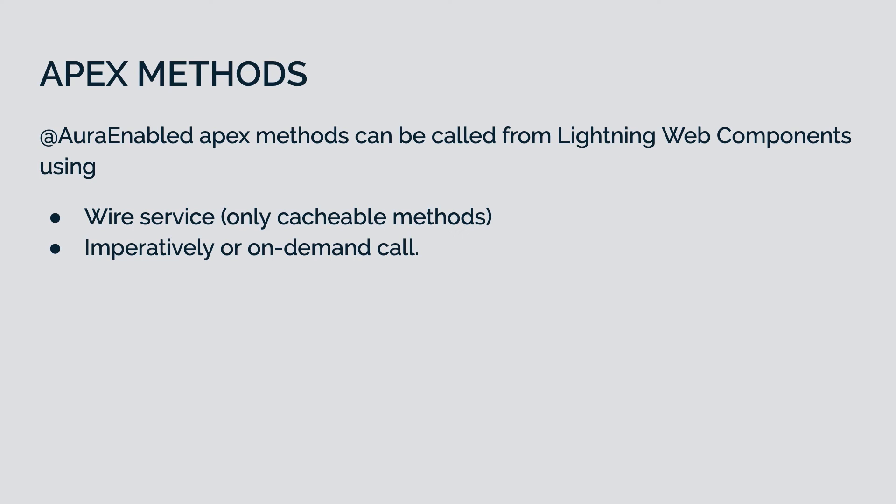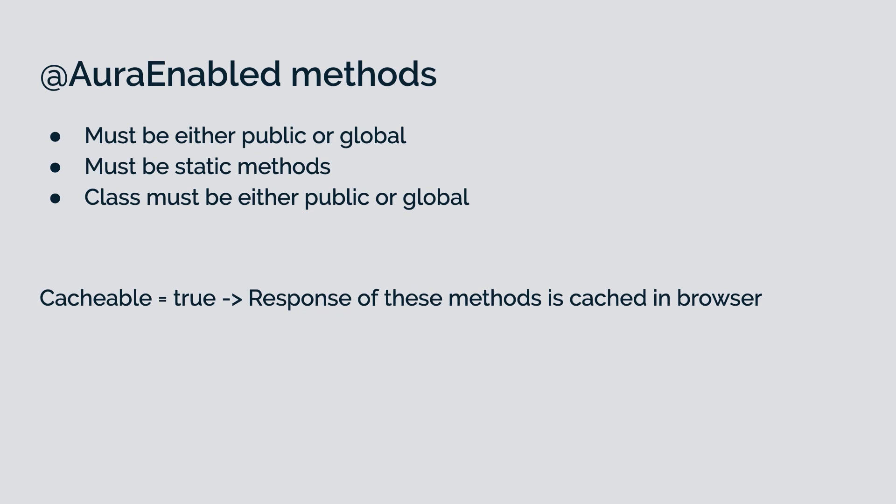Now let's talk about Apex methods. If you want to access an Apex method in your Lightning Web Component, first you need to annotate your Apex method with the @AuraEnabled annotation. These methods can be accessed via wire service — but make sure the method is cacheable, since wire service automatically caches data on the browser side. If your method is not cacheable, you can also make an imperative call by directly calling it from your JS file. A few things to remember: your class should be public or global, your method should be public or global, and your method must be static. If you make your @AuraEnabled method cacheable equals true, the response will be cached in the browser. These are all the different ways to access your Salesforce data or metadata.